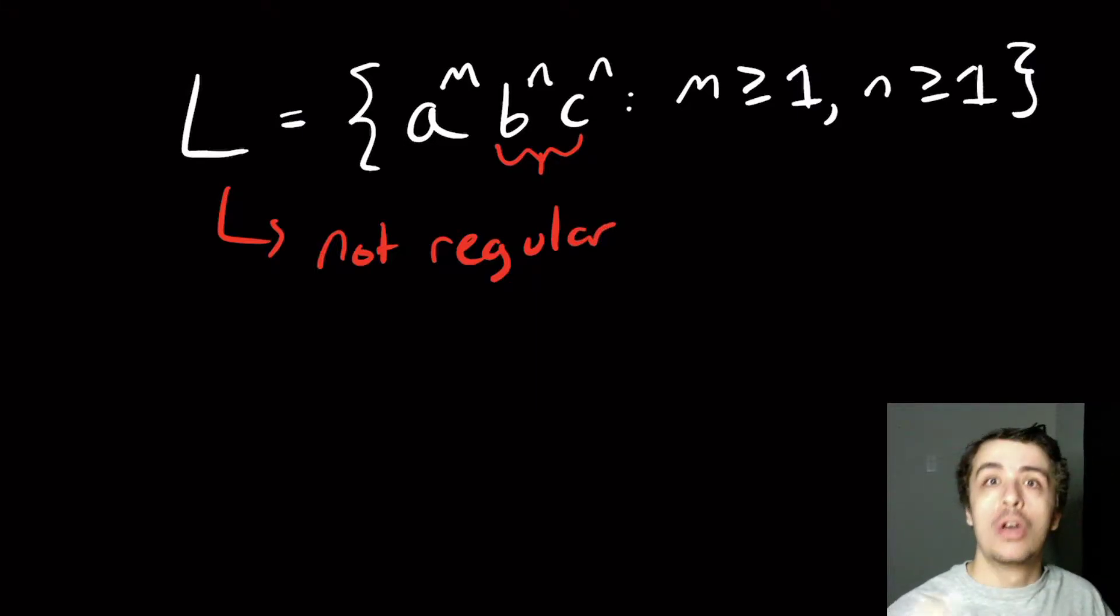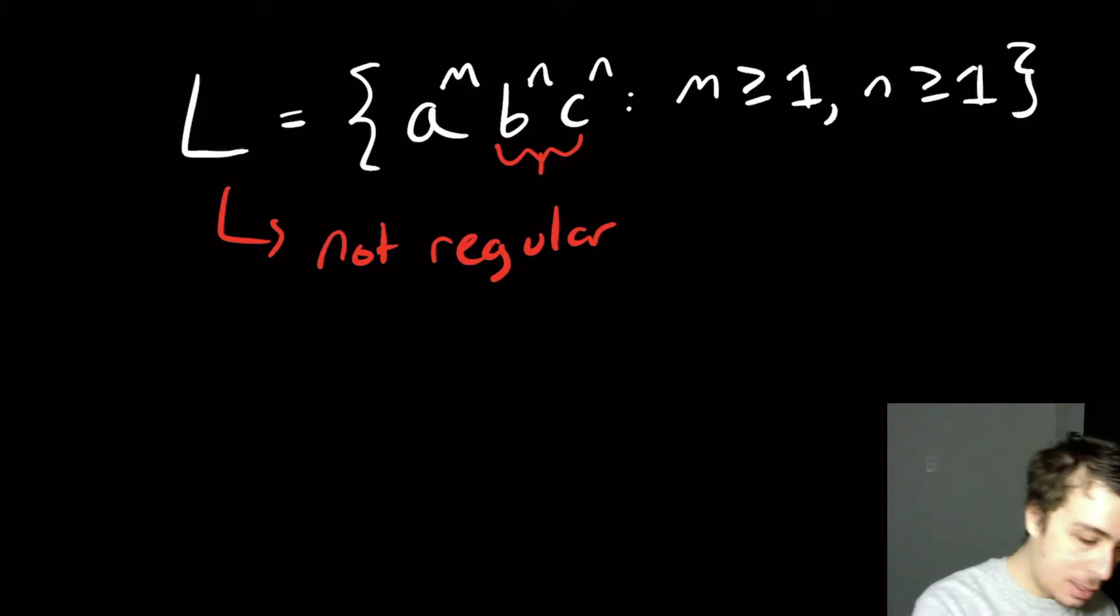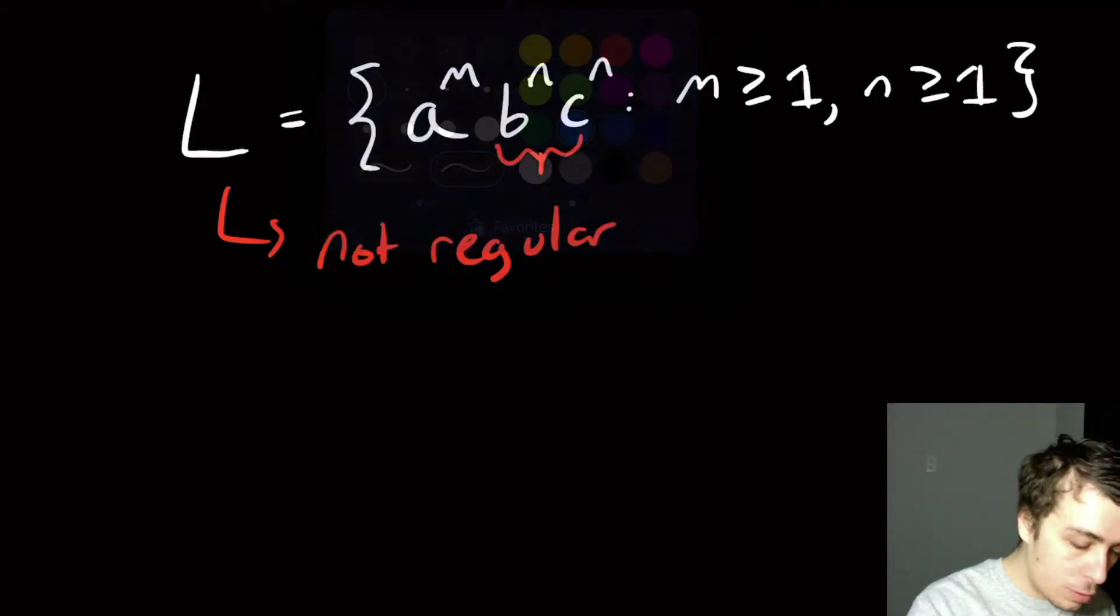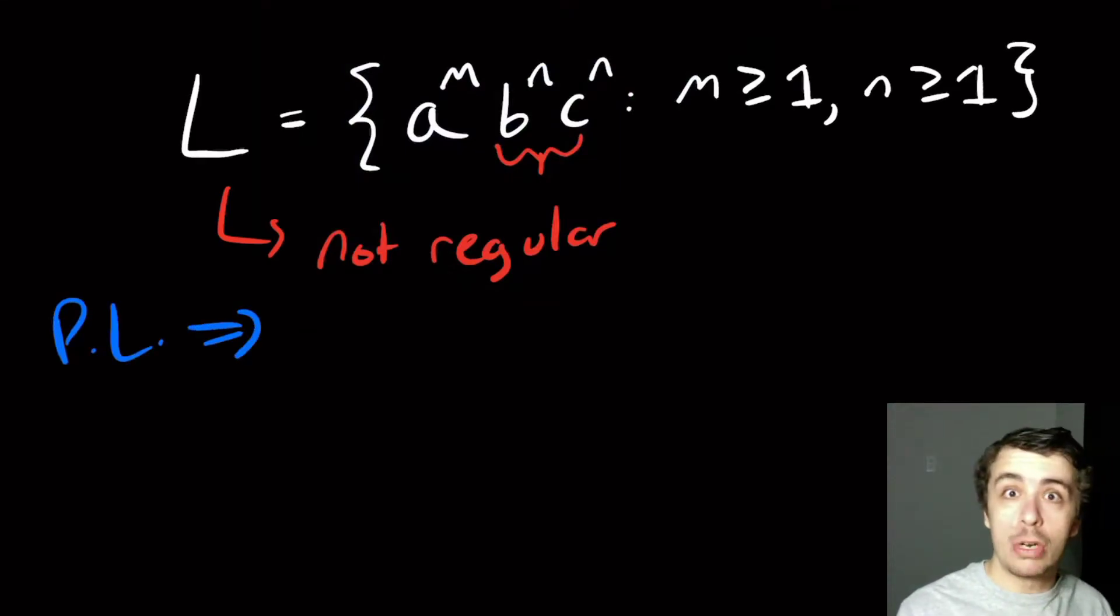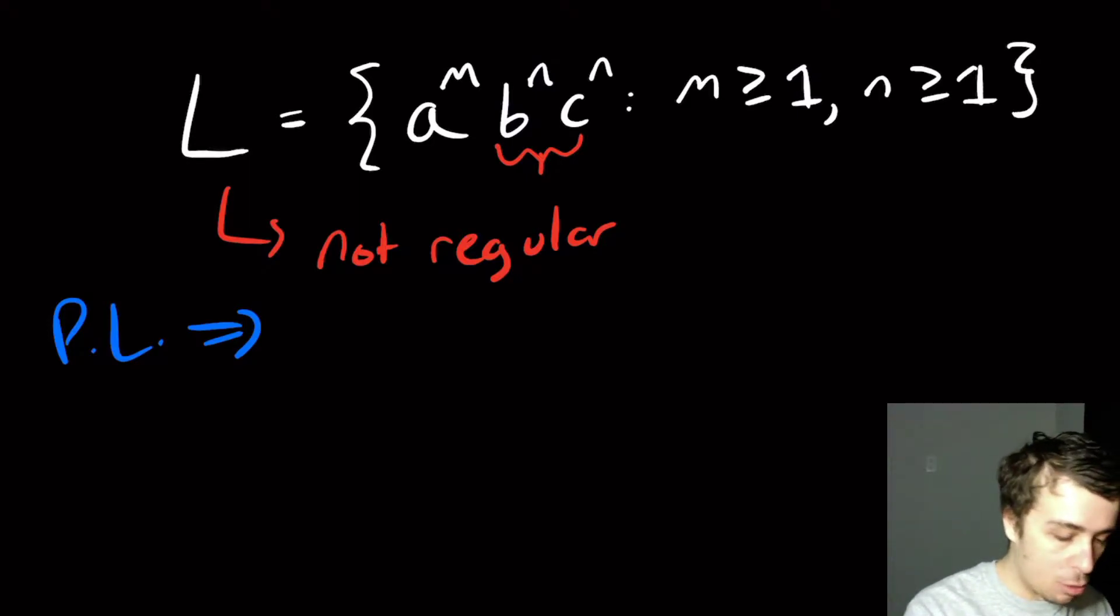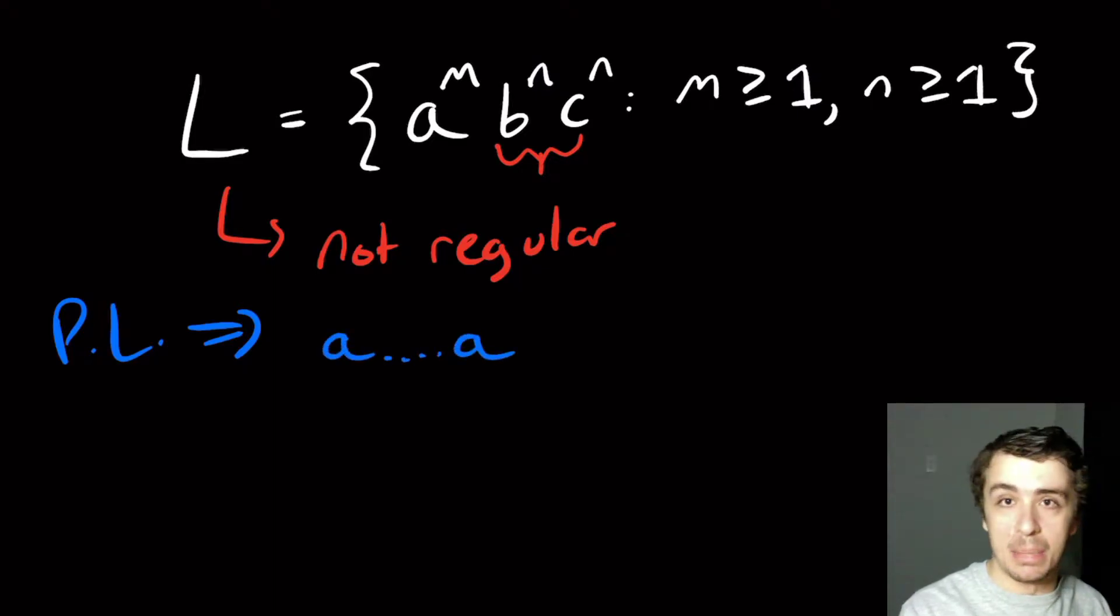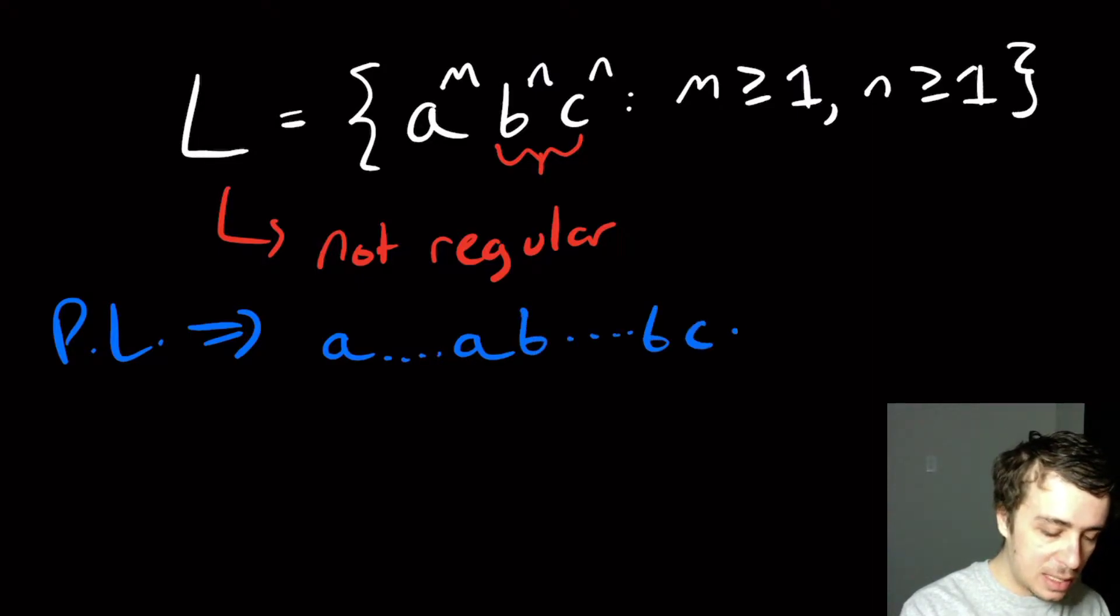But the problem is we can't prove that it's not regular using the normal pumping lemma. And why is that? So if we were going to use the pumping lemma, what we would do is we would have to pick a string that's in the language L and has length at least n or p or whatever we're calling it, the pumping length. So let's pick a string. No matter what we do, we have to pick something with some number of a's at the beginning, obviously. And then we have to pick some number of b's and then some number of c's.